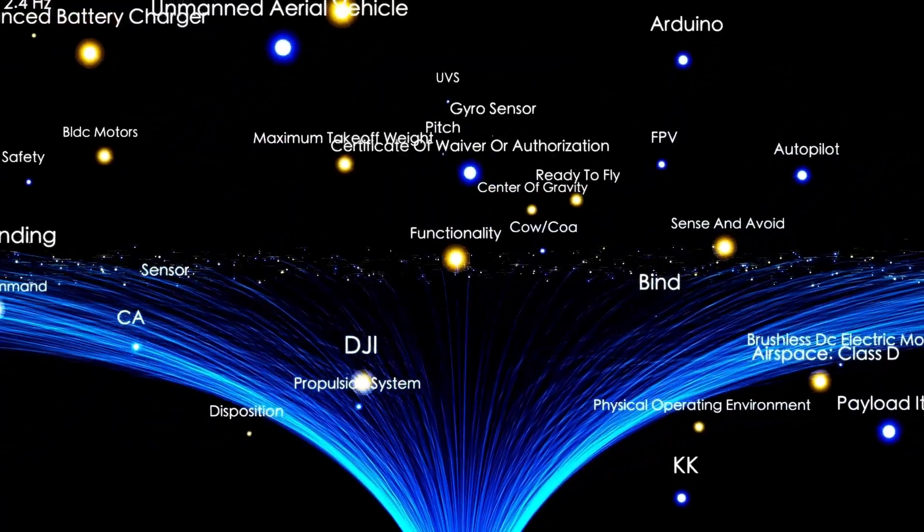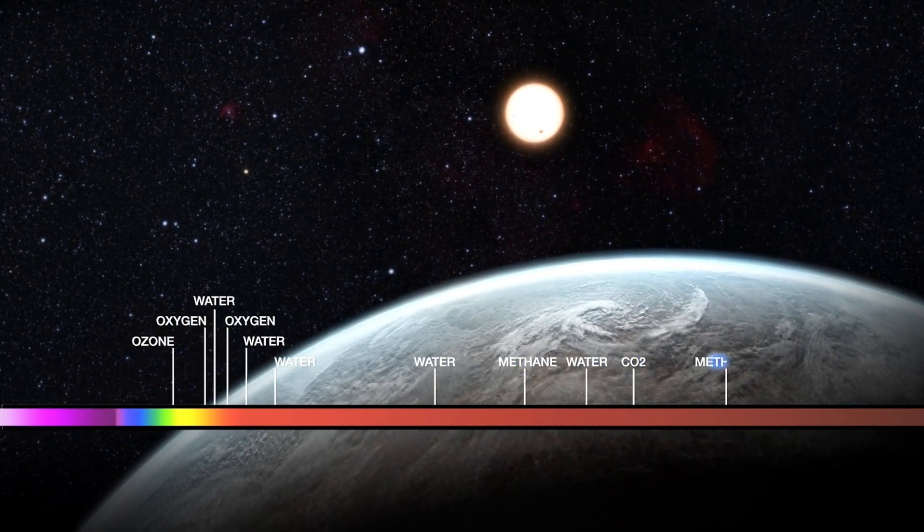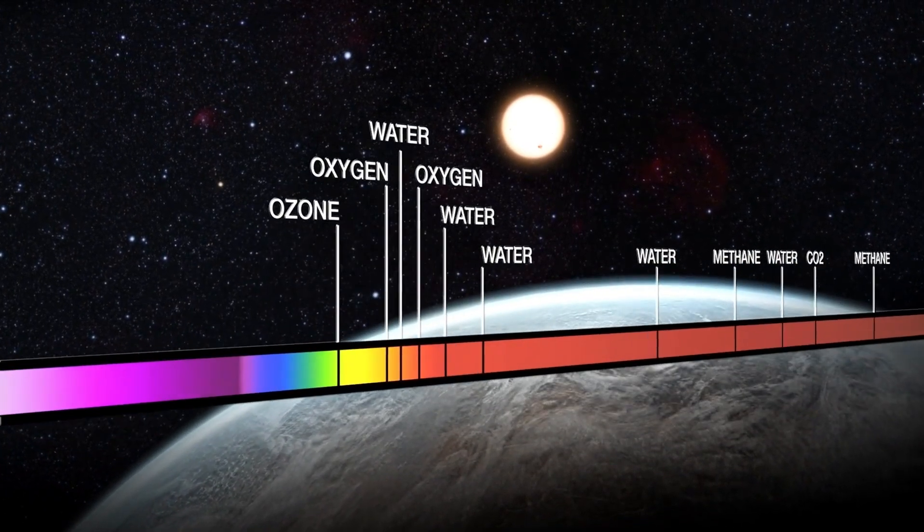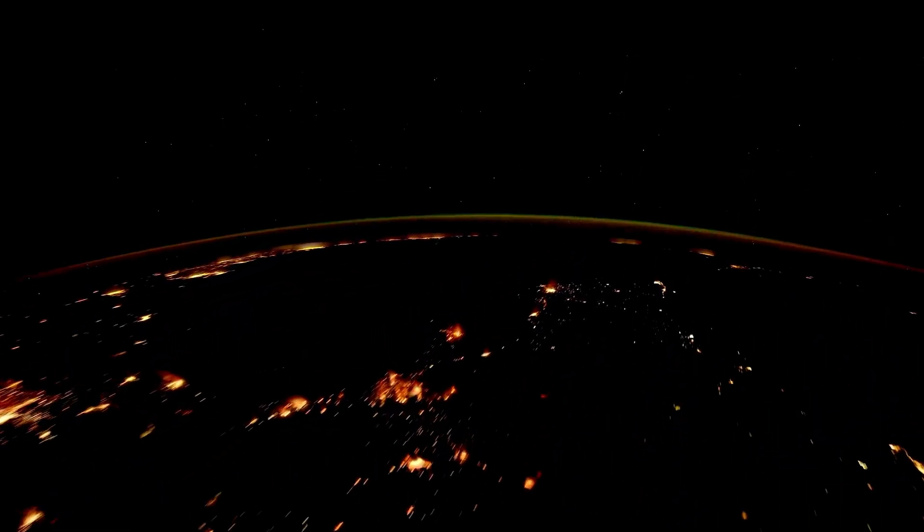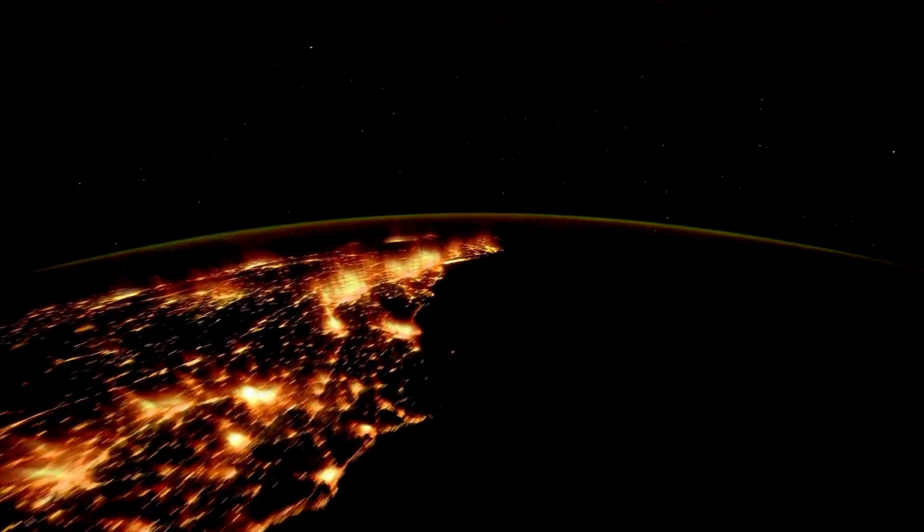Proxima Centauri b is a planet that orbits a red dwarf star about four light years from Earth. While it falls inside its parent star's so-called habitable zone, its habitability has been in doubt for years because of the extreme radiation from the host star and because it is tidally locked. One face is incinerated under perpetual daylight, the other frozen in unbroken night. Traditional wisdom held that life would not be able to take hold there. But these new findings indicate otherwise.